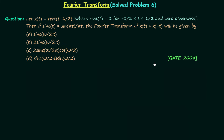Let's solve this question taken from the GATE 2008 electrical paper. We will first read the question and then solve it. Let x(t) = rect(t − 1/2), where rect(t) = 1 for t ≥ −1/2 and t ≤ 1/2, and 0 otherwise. Then, if sinc(t) = sin(πt)/(πt), the Fourier transform of x(t) + x(−t) will be given by: